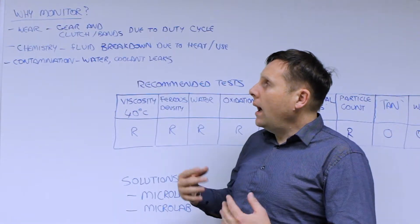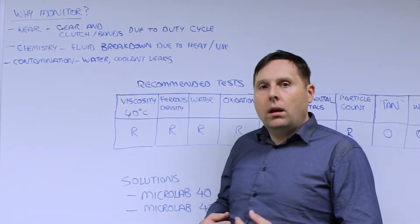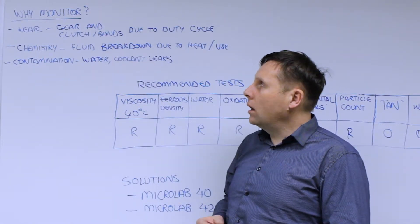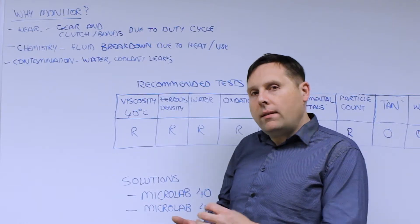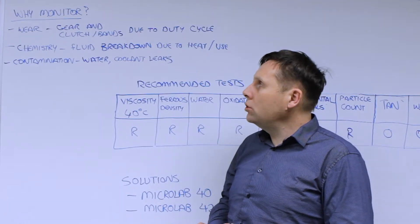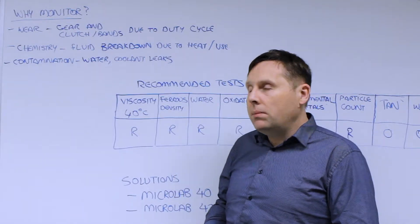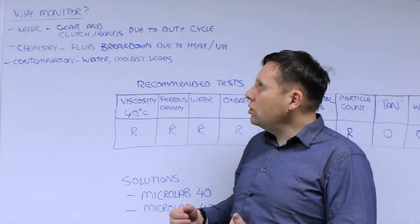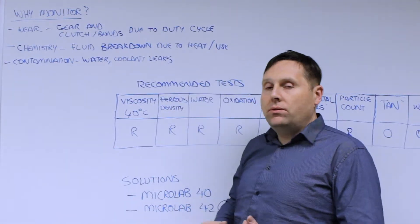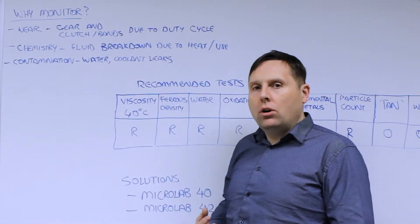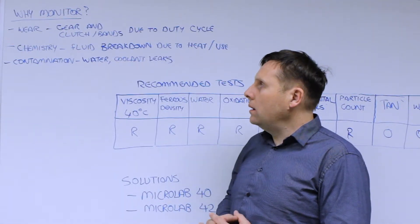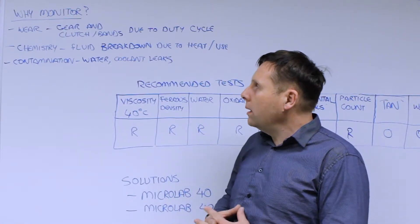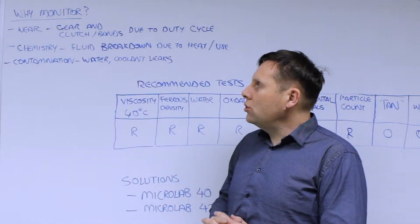You can get excessive wear due to the duty cycle. The vehicle has been driven too hard, the conditions are too tough. You get excessive wear on the clutch bands and gear sets that can cause metal fuzz showing up on the system, and it can lead to gear slippage. You can have chemistry issues where the fluid has not been changed and starts to break down due to heat and excessive use over time. It creates acids which cause corrosion, which can affect the condition of the system as well as the flowability of the fluid.